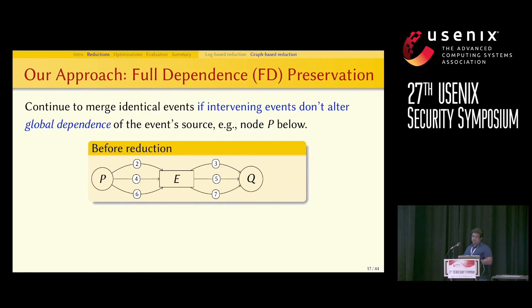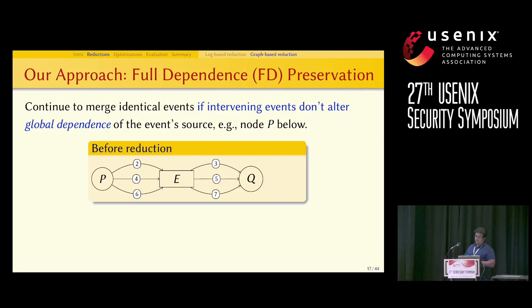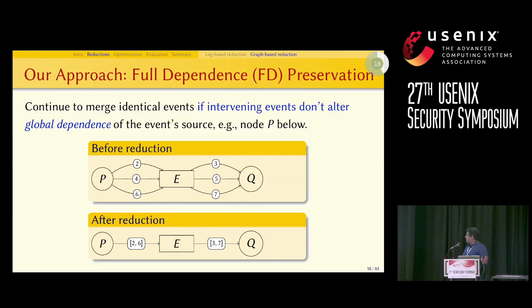Our approach, full dependence preservation, allows continuing to merge events if the intervening events don't alter the global dependency of the nodes. For example, the global dependence of node P does not change between times 2 to 6, so those events can be merged. Similarly, for node E from time 3 to 7, the only global dependence is on node P, so those three events can also be merged, producing the reduced graph.